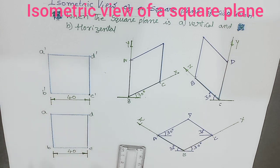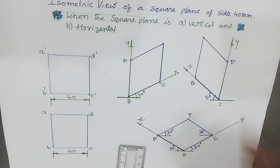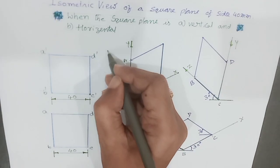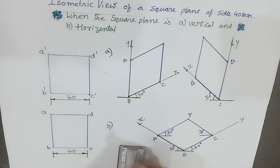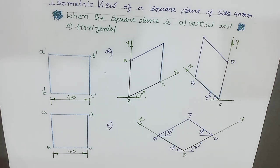Actually it's a square — the square looks like a rhombus in isometric view. That's about the construction of isometric view of a square when the plane is vertical, and when the plane is horizontal. Now we will see the isometric view of a rectangle.